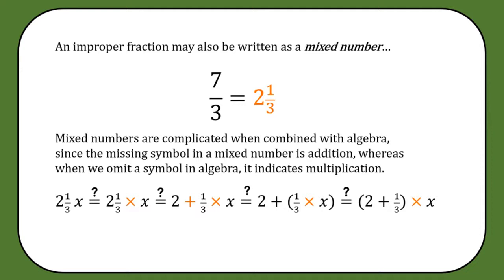For example, if we had 2 and 1 thirds times x — that is, 7 thirds times x written as a mixed number — what we really mean is 2 and 1 thirds multiplied by x. But putting in all the missing symbols, 2 and 1 thirds is 2 plus 1 third, and we're multiplying that by x. By order of operations, multiplication happens before addition, so 2 plus 1 third multiplied by x actually means a third times x then add 2, which is not our intention at all. We can avoid this problem by simply not using mixed numbers — stick to improper fractions and they will get you everywhere.